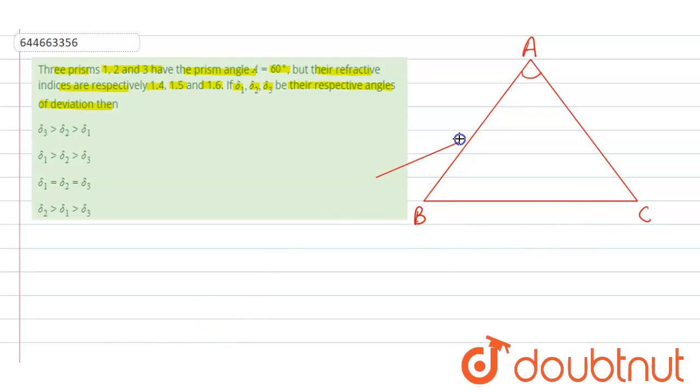This is the incident light ray, this is the refracted light ray and this is the emergent light ray.